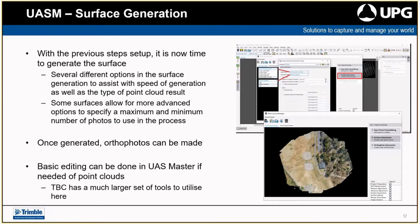There are also options for high, medium, and low extraction for each surface generation type. Generally, if you just want to get a point cloud out of UAS Master, the default settings are pretty good — you shouldn't need to spend a lot of time changing them. The options are there if you need to become more advanced.